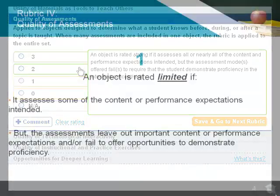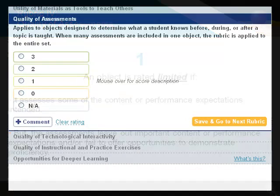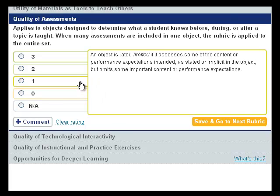An object should be rated limited, a 1 rating, if the assessments in the object assess some of the content as it intends, but the assessments leave out important content or performance expectations or fail to offer the student opportunities to demonstrate proficiency.